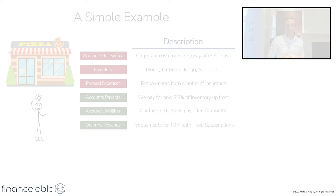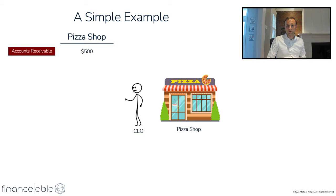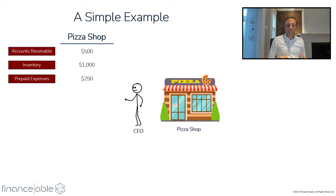Just like last time, we have accounts receivable of $500 from corporate customers who haven't paid us yet. We've made an investment in inventory for sauce, dough, and so on. And we've prepaid for our insurance policy for six months. In total, our assets are going to use up $1,750 of cash — so we have to fund $1,750.